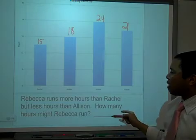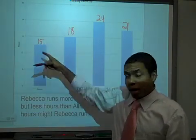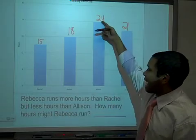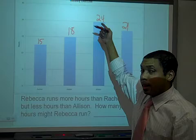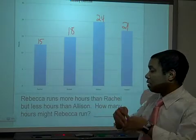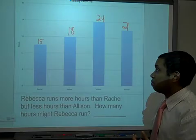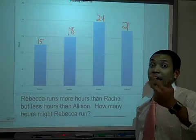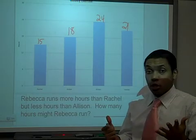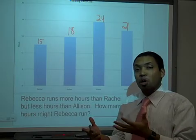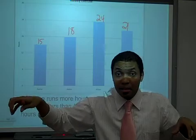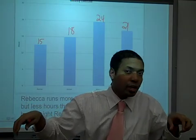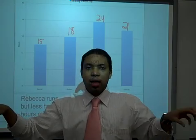Now, the question says Rebecca runs more hours than Rachel. Well, how many hours does Rachel run? Rachel runs 15, so I know that Rebecca has to run more than 15 hours. And then it says, but less than Allison. Well, Allison runs 24 hours. She has to run less than 24 hours. So, I can figure out how many hours Rebecca might run. Well, it could either be 16, that's greater than 15 but less than 24, 17, 18, 19, 20, 21, 22, 23 hours. So, either of those choices would work because the number is within the range of 15 as the minimum and 24 as the maximum. It's 16, 17, 18, 19, 20, 21, 22, 23 is within the range of 15 and 24.